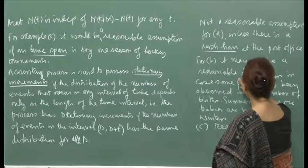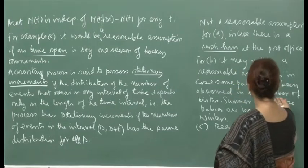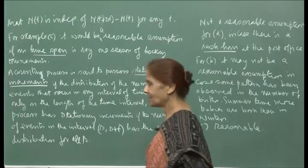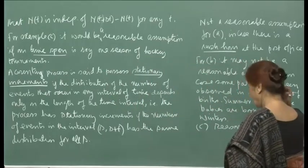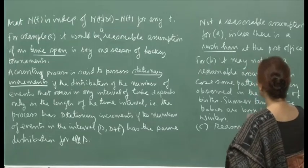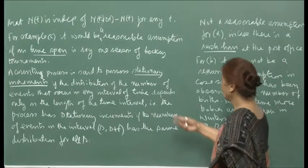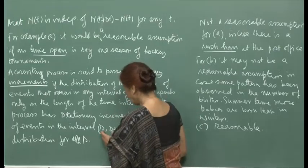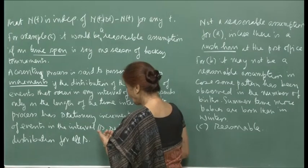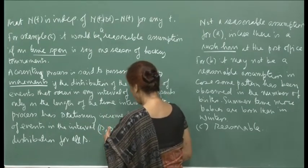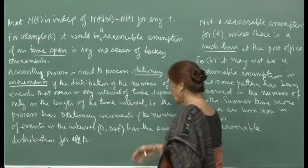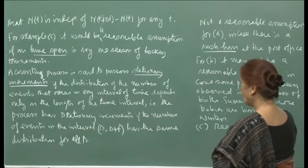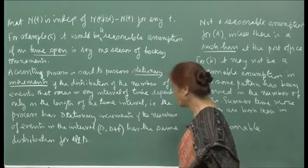Again for B — number of births — it may not be a reasonable assumption. Some sort of pattern has been observed in the number of births; summertime more babies may be born than during winters. So again, if some pattern has been observed in the town, B may not satisfy the assumption of stationary increments. For the same length of time, the number of events may have different distributions depending on whether the interval is in summer or winter.